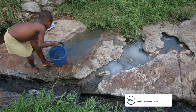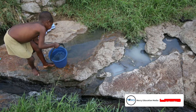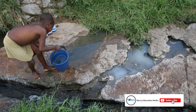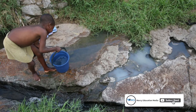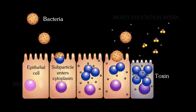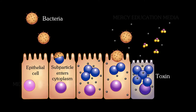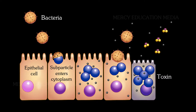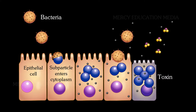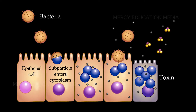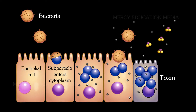Cholera is transmitted in water and food contaminated with this bacteria. In the small intestine, the bacteria adhere to epithelium, multiply and produce the enterotoxin.